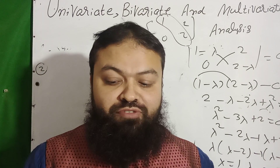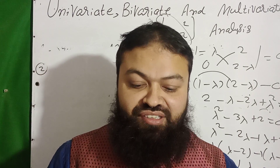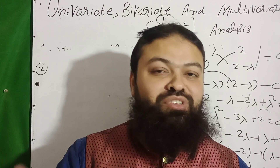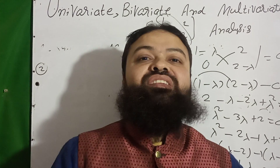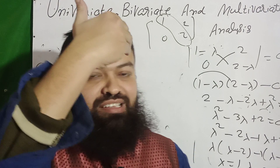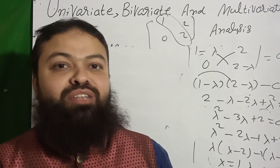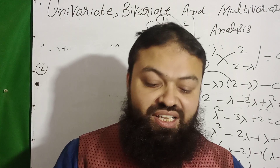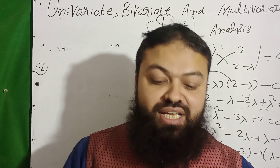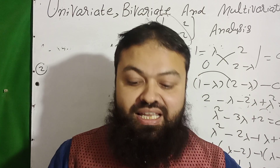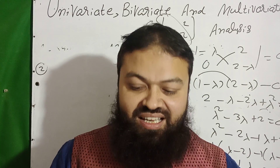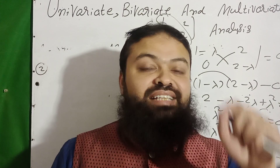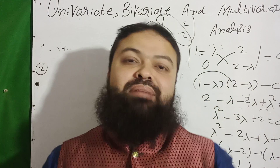The off-diagonal elements in a variance-covariance matrix represent covariances, as I told you. The diagonal values represent variances. Another exam question: a square matrix in which the diagonal elements are equal to one and the off-diagonal elements are equal to zero is called the identity matrix.